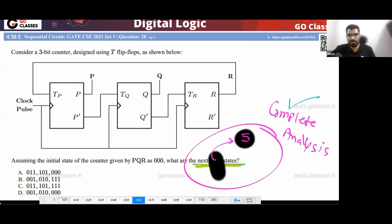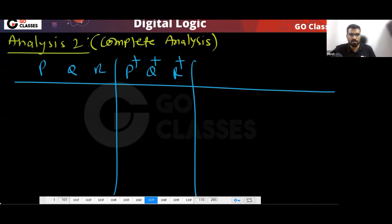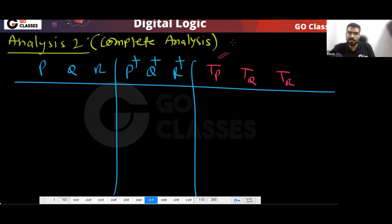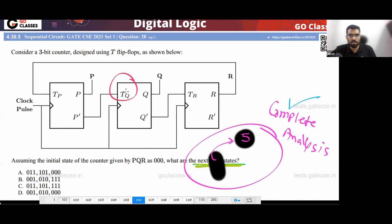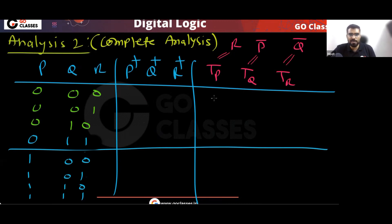For the complete analysis, we have PQR and we want the next state P+, Q+, R+. We have TP, TQ, TR. TP equals R, TQ equals P', and TR equals Q'. This is very easy.